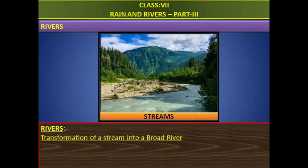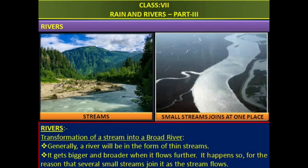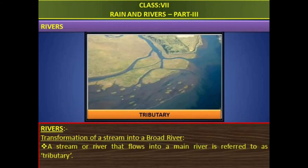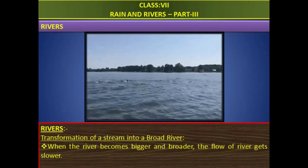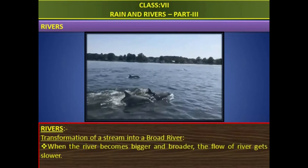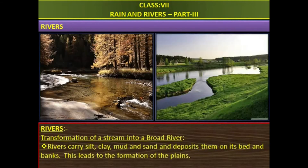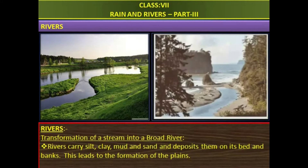Now let us learn how small streams transform into a broad river. Generally, a river will be in the form of thin streams. It gets bigger and broader as it flows further, because several small streams join it. A stream or river that flows into a main river is referred to as a tributary. When the river becomes bigger and broader, the flow of the river gets slower. Rivers carry silt, clay, mud, and sand and deposit them on their bed and banks. This leads to the formation of plains.